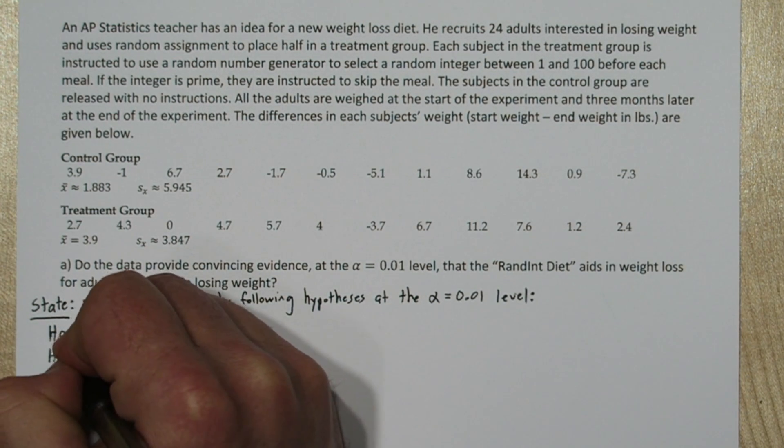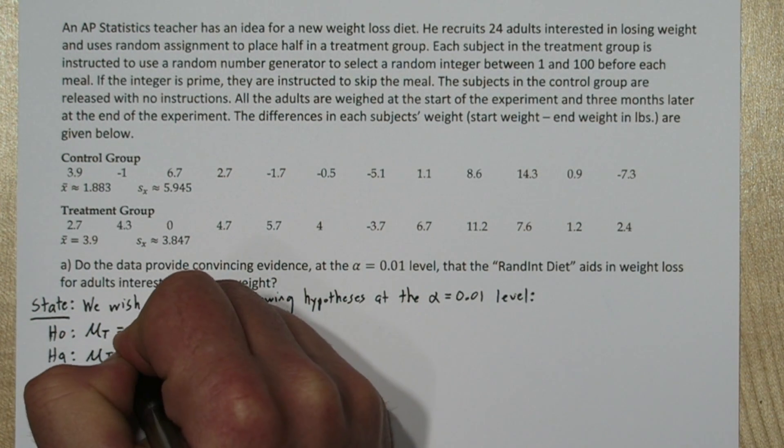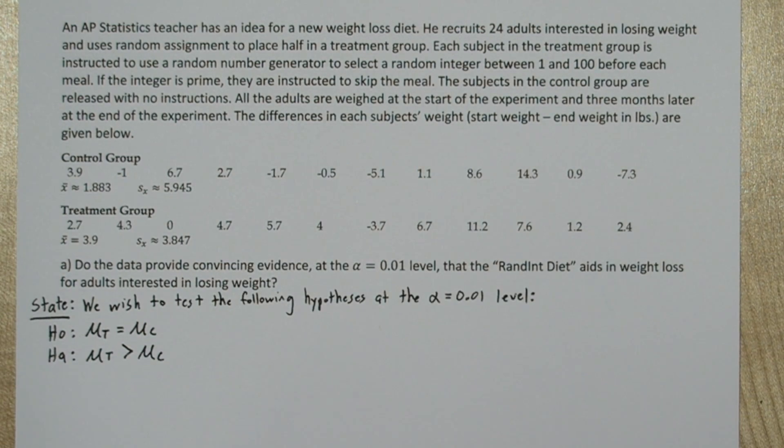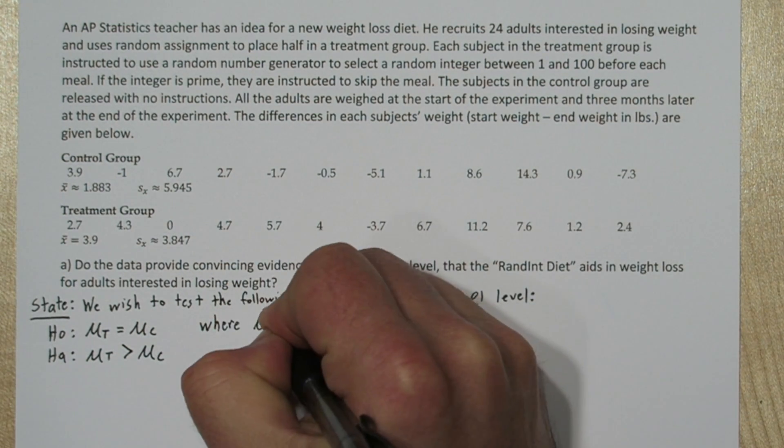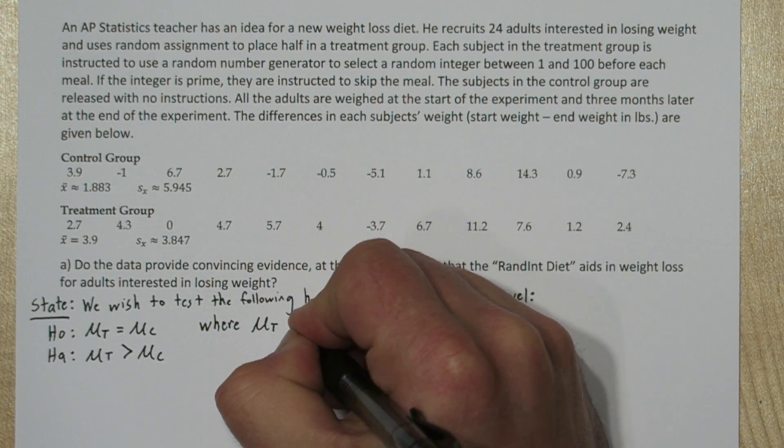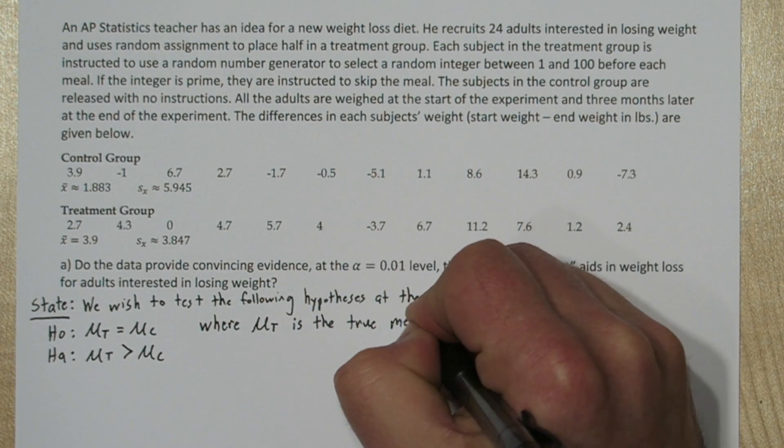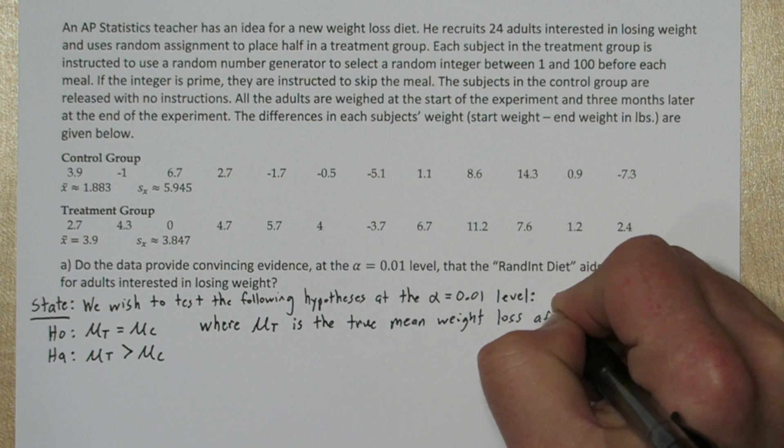And since we're interested in the mean weight loss, a greater mean would be a more effective diet plan. So our alternative hypothesis is that mu sub t, the true mean of the treatment group, is greater than mu sub c, the true mean of the control group.